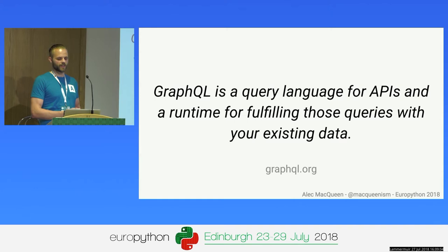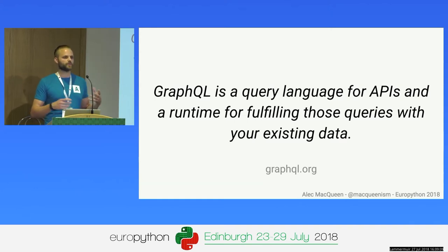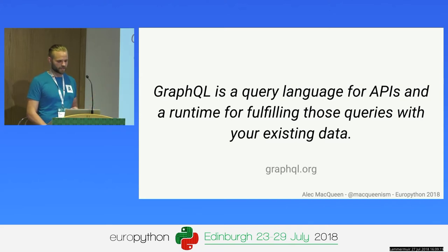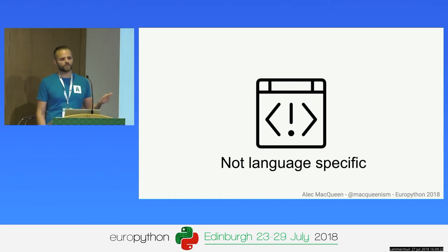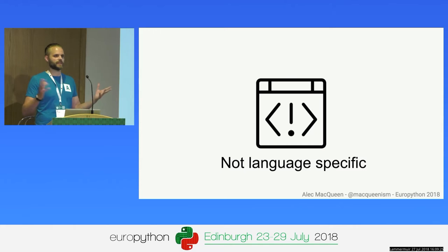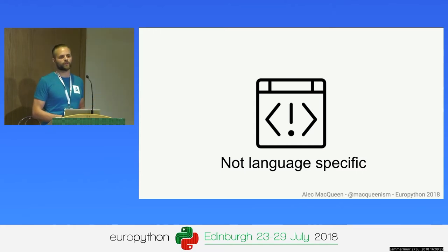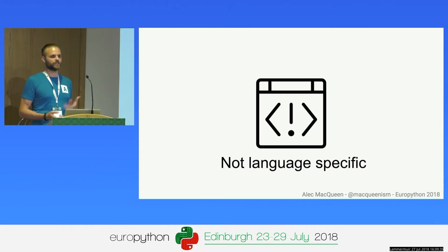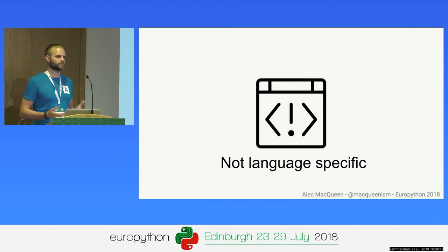As a developer, you're going to have to define some data types in your code. You need to create resolver functions to help you resolve those types against your existing data. Then you pass the whole lot into a runtime, and there's your API. GraphQL is not language specific — it's just a specification, just an idea. So that means you can implement GraphQL in whatever language you like. There are implementations in JavaScript, Java, Python, Golang — you name it, there's probably an implementation.